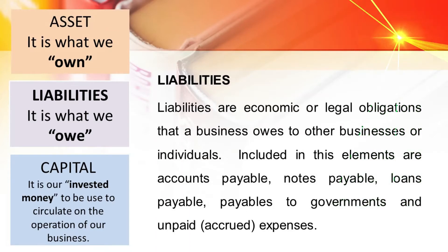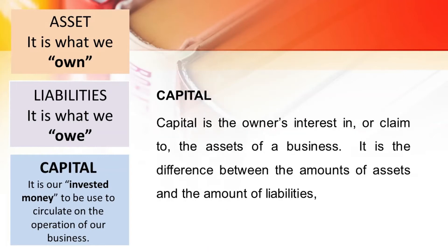Part of ALC or real accounts are liabilities — it is what we owe. Liabilities are economic or legal obligations that a business owes to other businesses or individuals. Included are accounts payable, notes payable, loans payable, payables to governments, and unpaid or accrued expenses. Capital is our invested money used to circulate in the operations of the business. Capital is the owner's interest in or claim to the assets of a business — the difference between the amount of assets and the amount of liabilities.